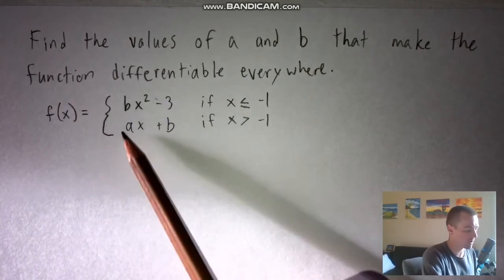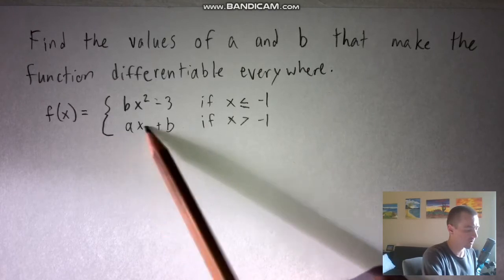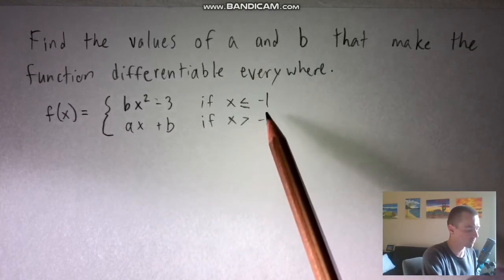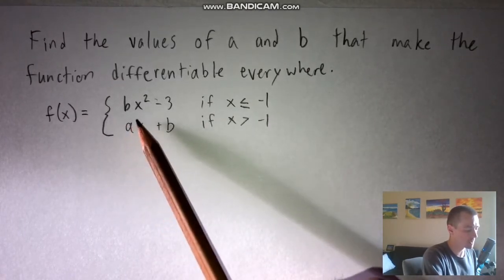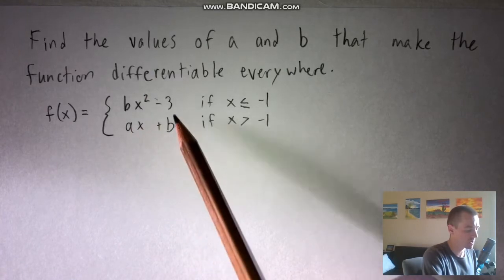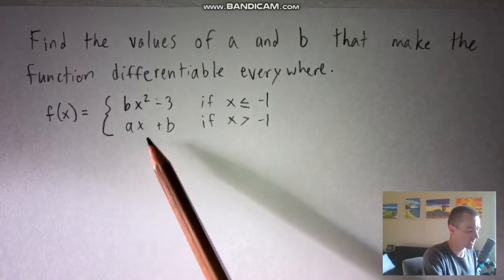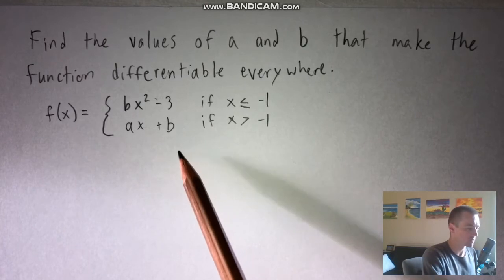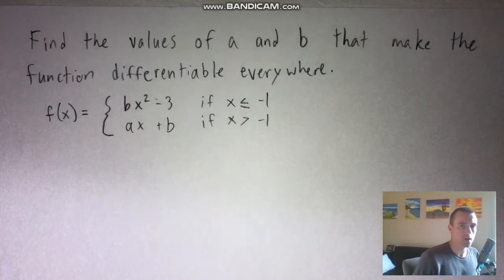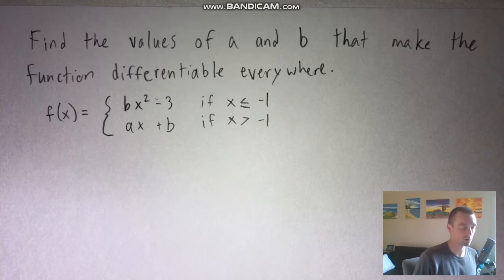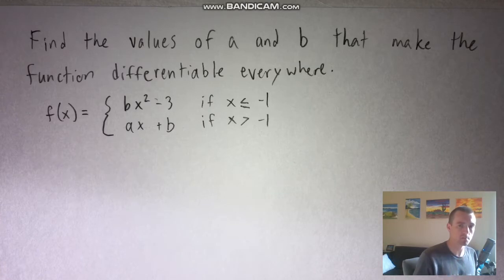It's this piecewise function here where when x is less than or equal to negative one, we're going to use b times x squared minus three, and then when x is greater than negative one, we're going to use ax plus b. This is a pretty common type of problem. When you're trying to make a piecewise function like this differentiable everywhere, there's two conditions that you need to meet.